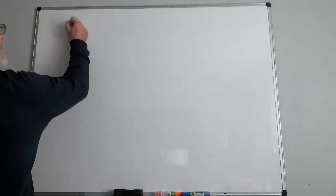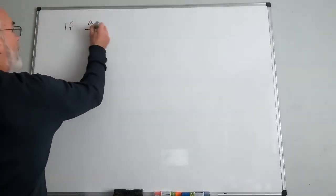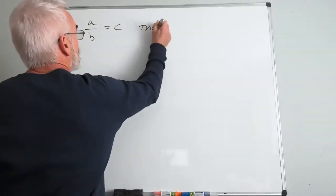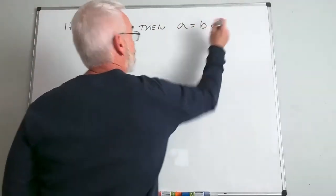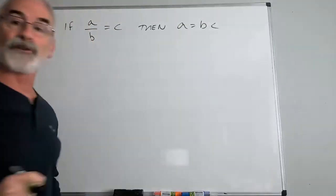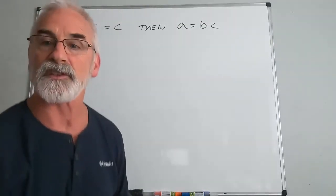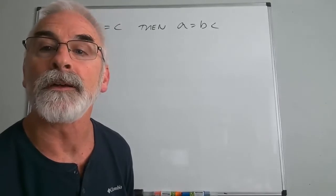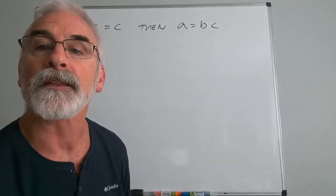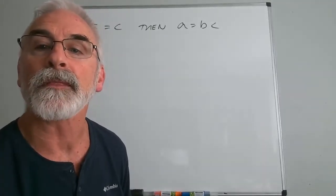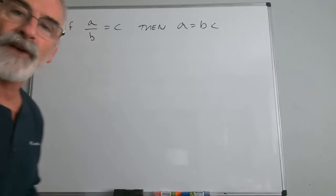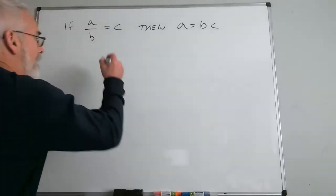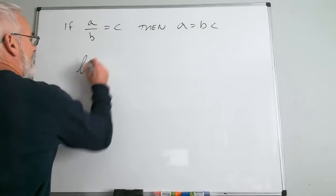For example, if a over b equals c, then a equals bc. This is an absolute — there is no exception to this statement mathematically. But we violate this one all the time. I'll give you a simple example when evaluating a limit.